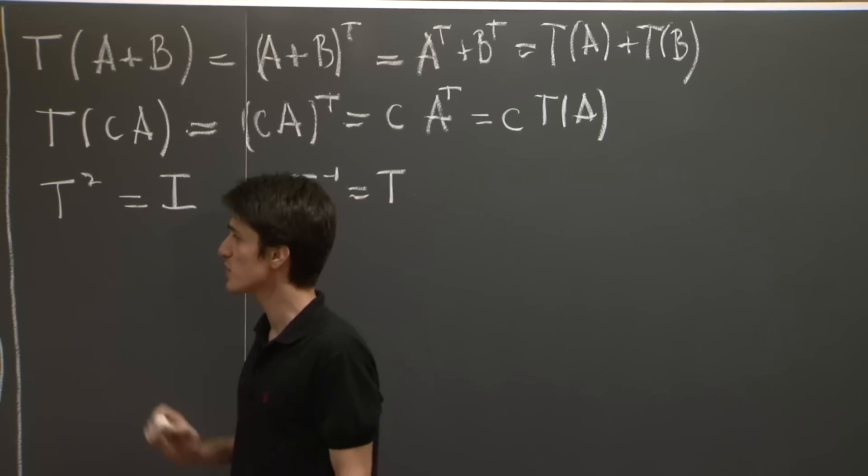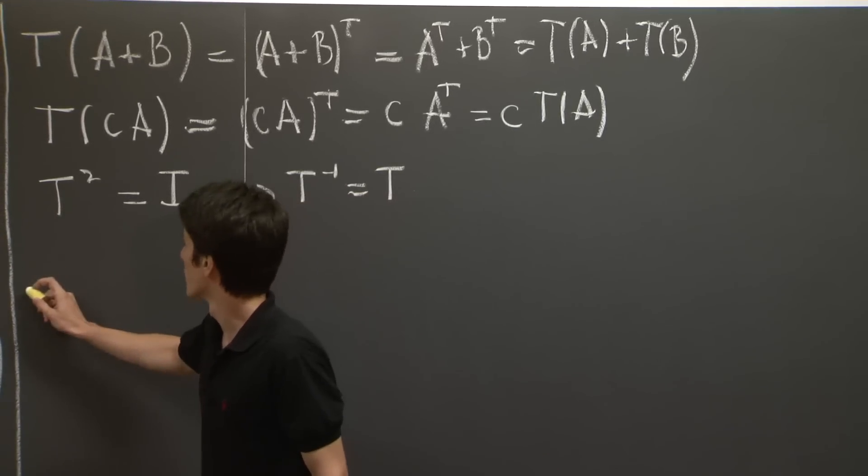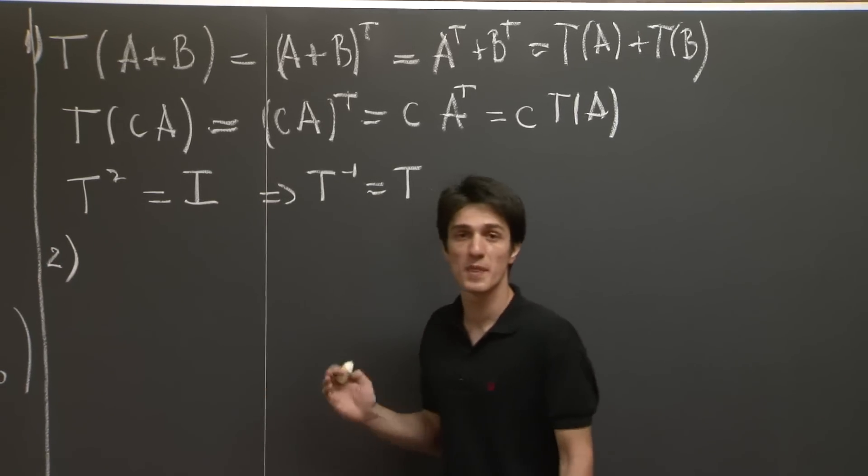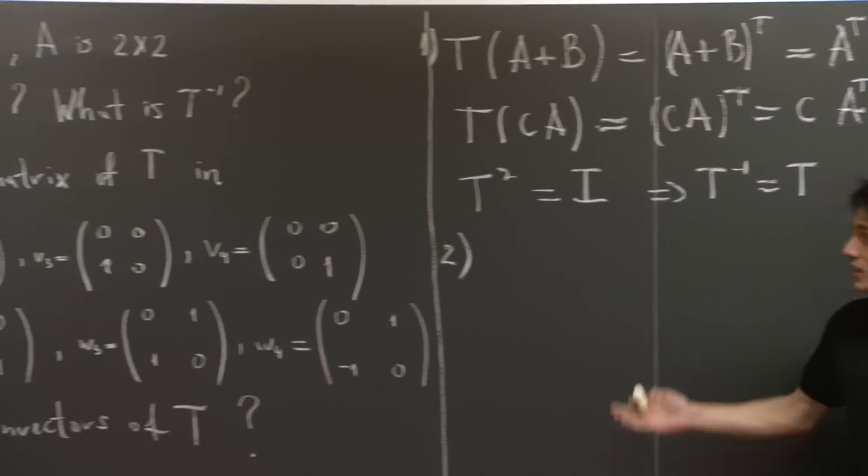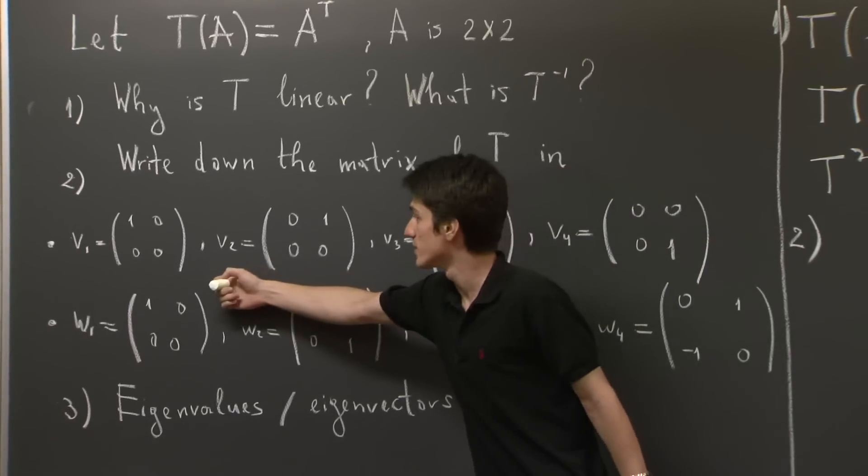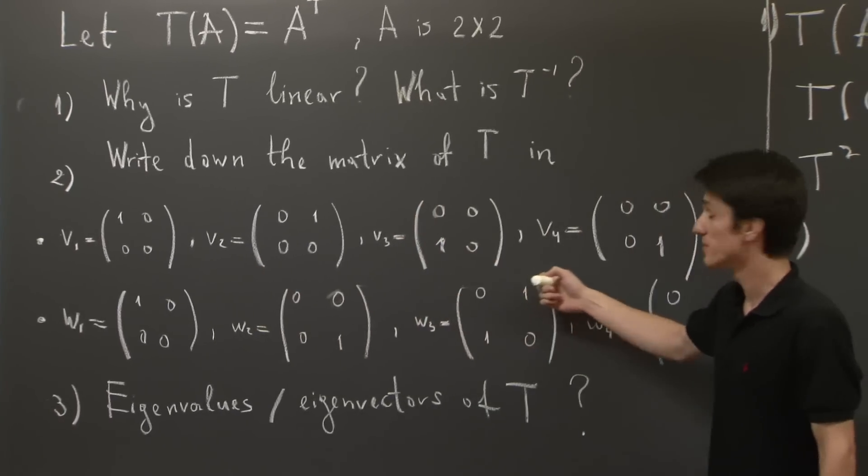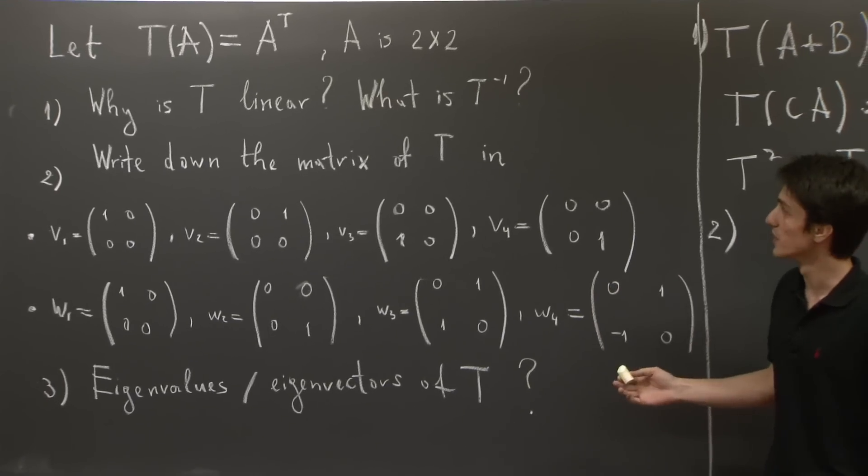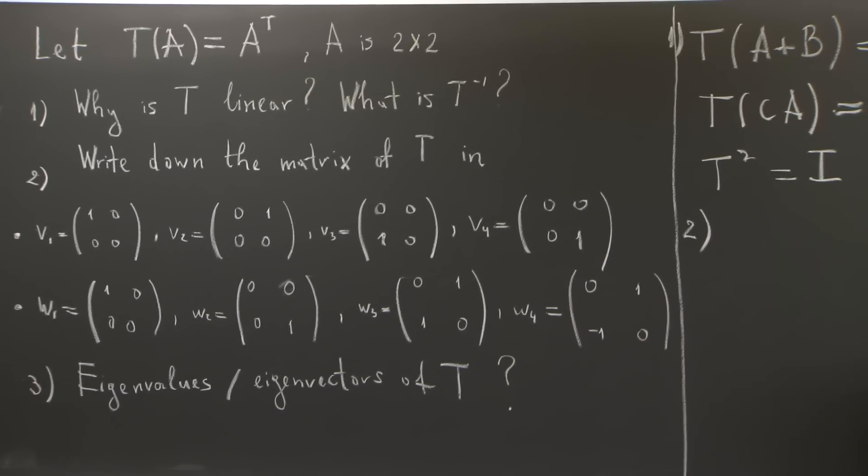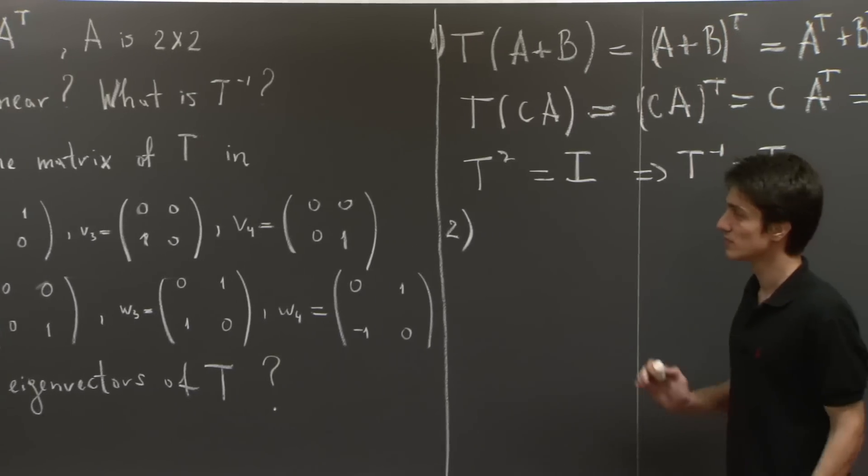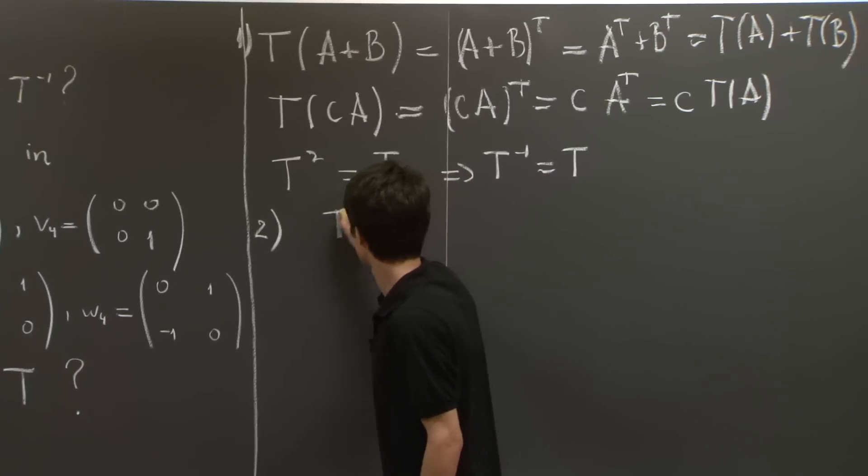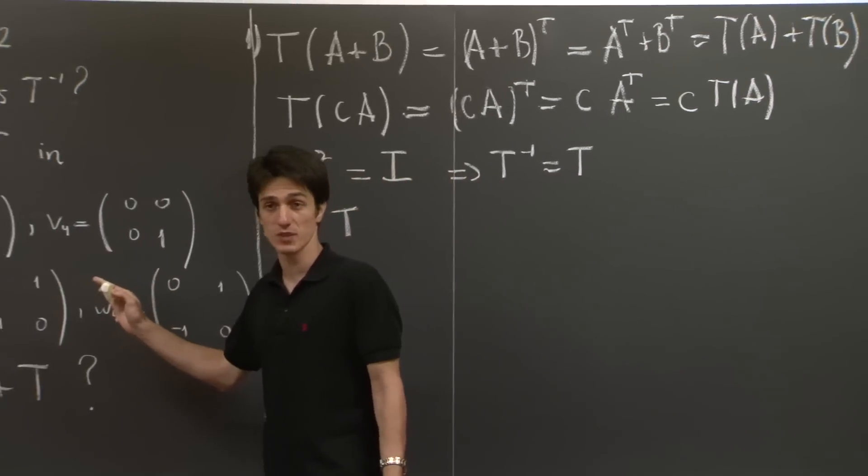This was part one. Part two, we'll compute the matrix of the linear transformation in the following two bases. The first basis is the standard basis for the space of two-by-two matrices. And the way we compute the matrix, we first compute what T does to each of the basis elements.